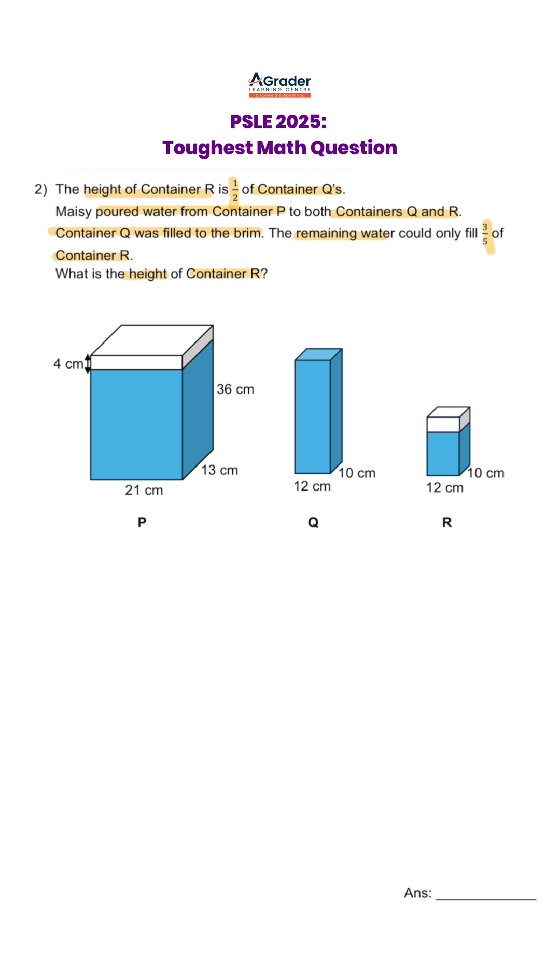Let's look at this question. Water is poured from container P to both container Q and container R. We know that container Q is filled to the brim, and the water remaining can only fill 3/5 of container R.